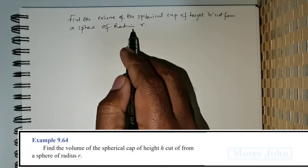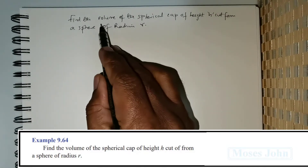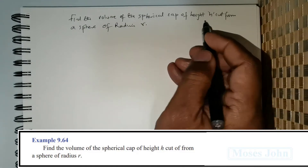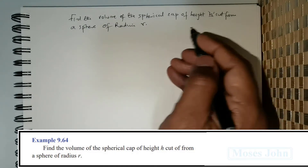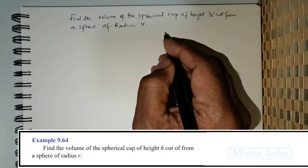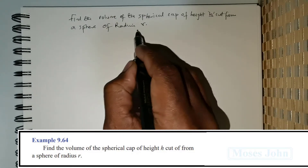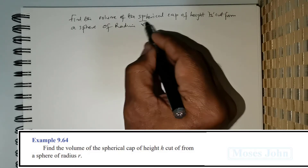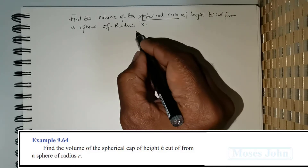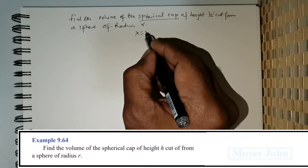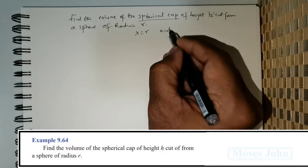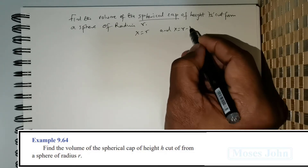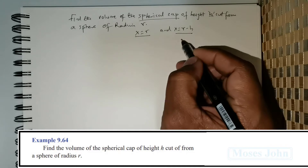This is a standard result. We are expected to find the volume of a spherical cap of height h cut off from a sphere of radius r. To obtain this spherical cap, we use x = r and x = r − h as the two boundary lines.